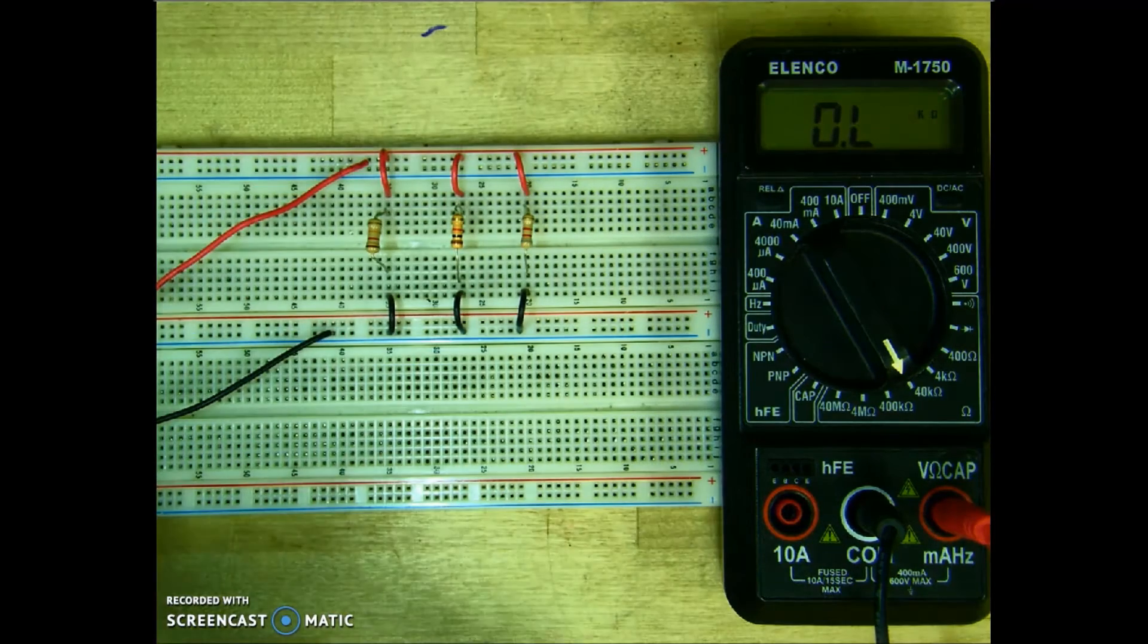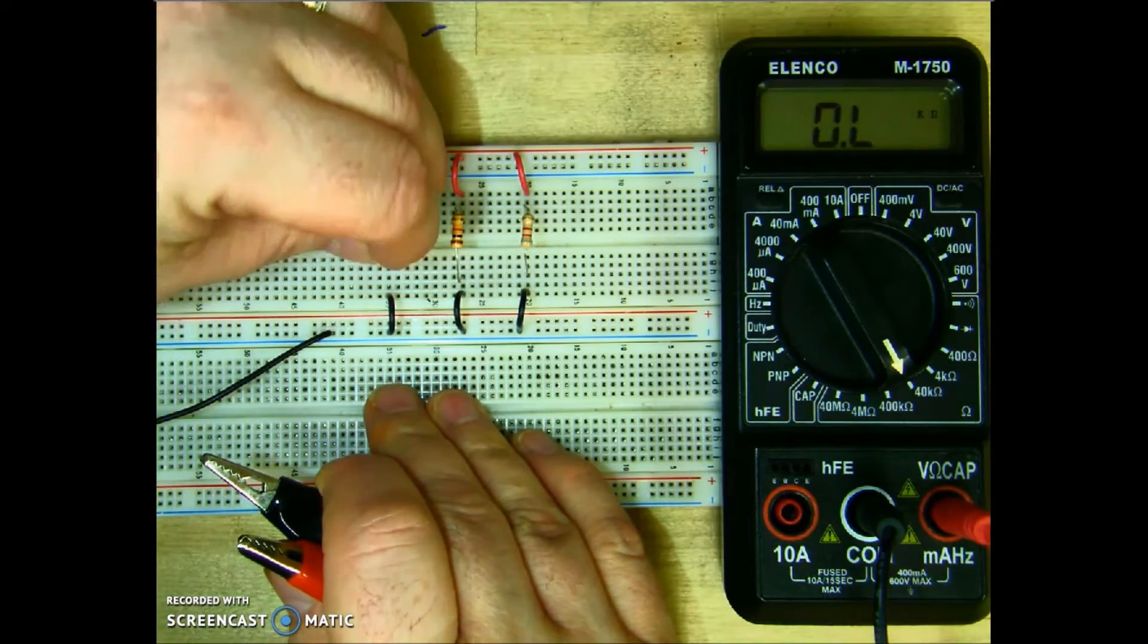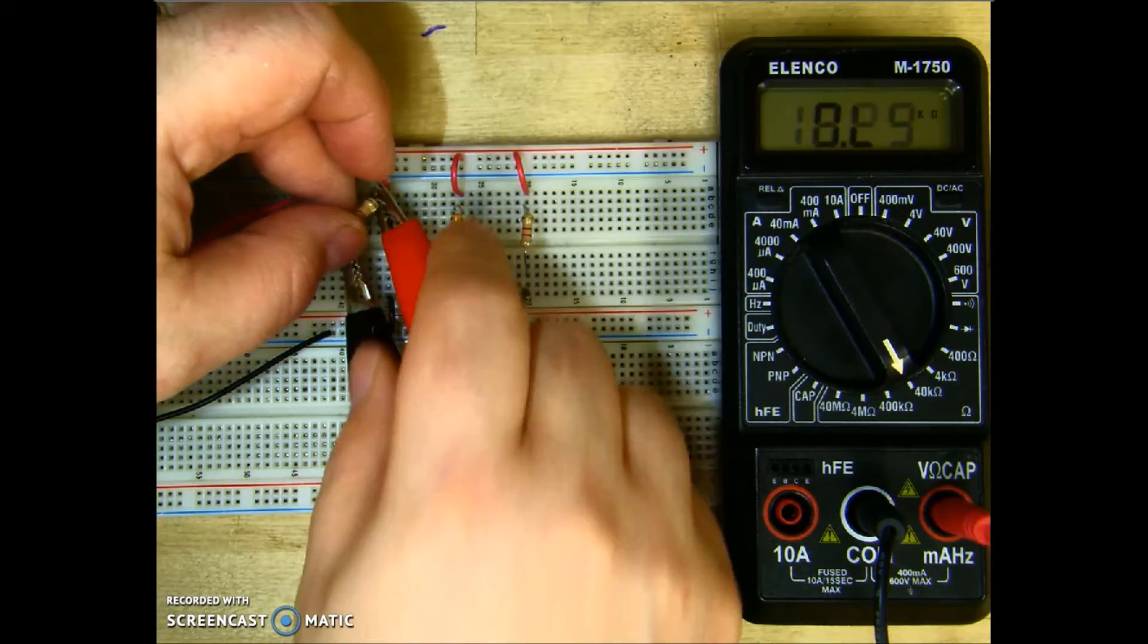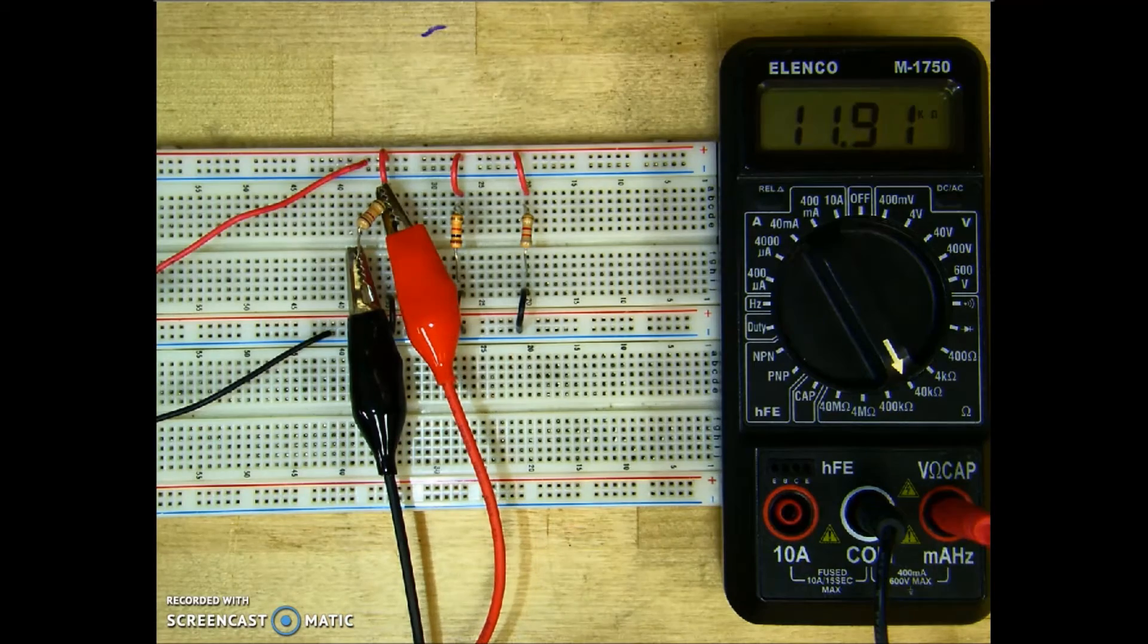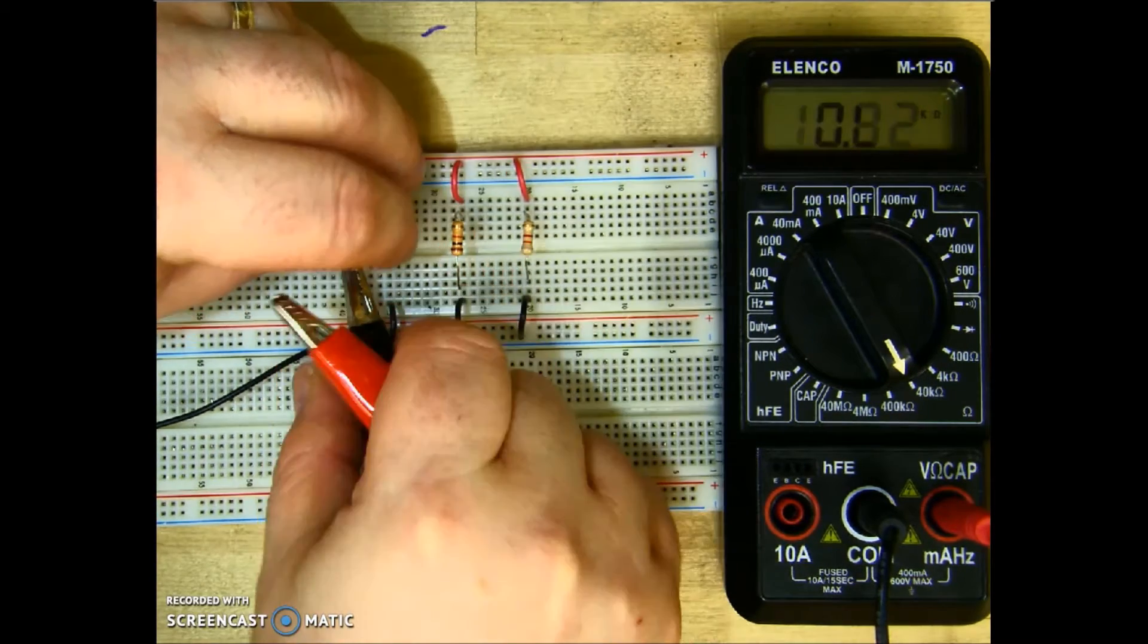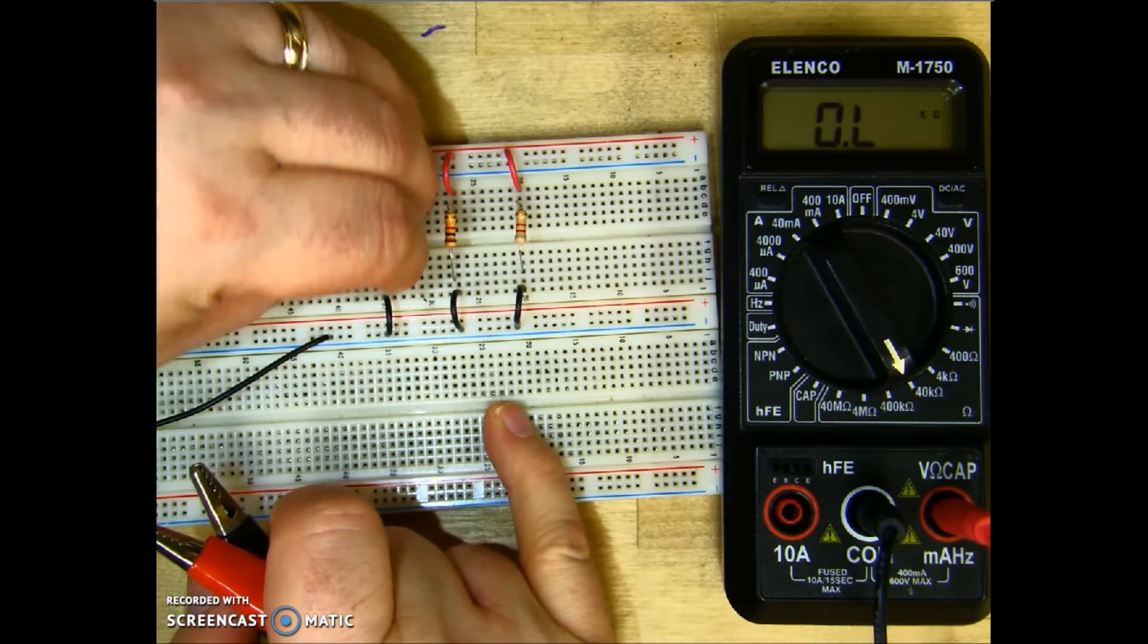So I'm going to measure R1. I have to take one terminal out of the circuit, connect up my meter, and I read 11.91. I'll go ahead and put that back in the circuit.